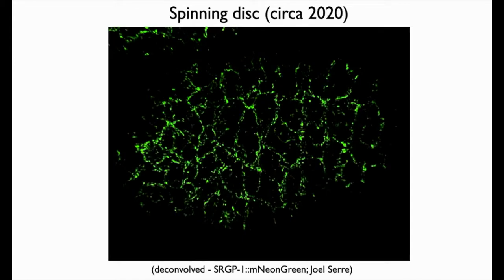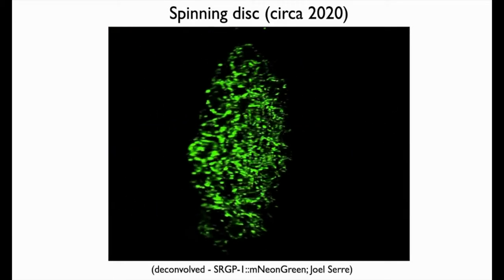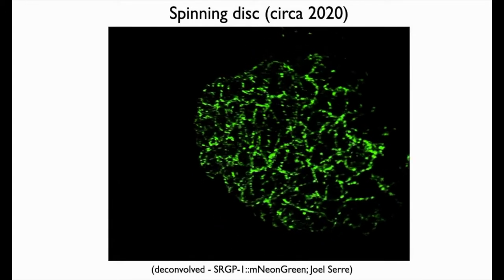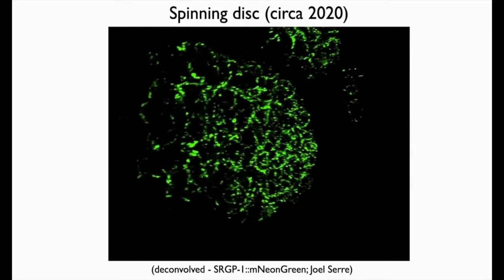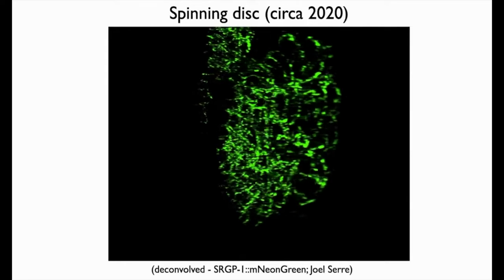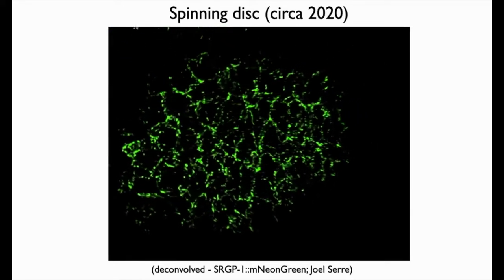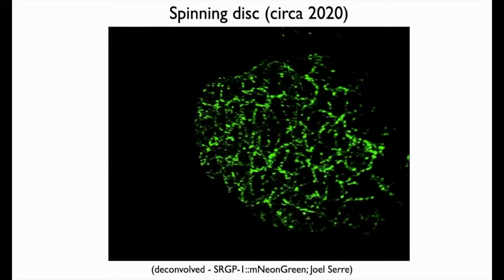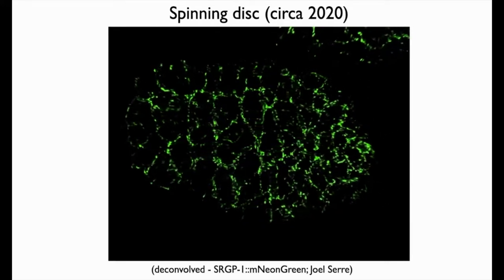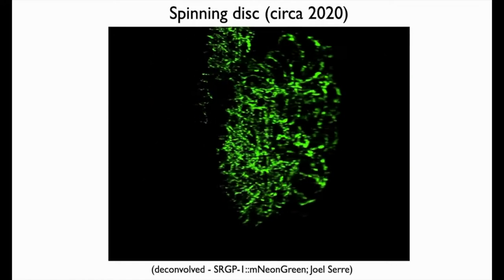What might SR-GAP1 be doing instead? We think it might be modulating membrane curvature. Here's an mNeonGreen knock-in for SR-GAP1 that Joel made, showing it is dynamically deployed at the edges of cells during dorsal intercalation. It looks like SR-GAP1 accumulates in bright spots at sites where cells are going to undergo neighbor exchange. And on the Dragonfly — one of the few images Joel generated before COVID-19 lockdown — this deconvolved snapshot of SR-GAP1-mNeonGreen shows it at the cell periphery, possibly at the tips of cells migrating contralaterally.